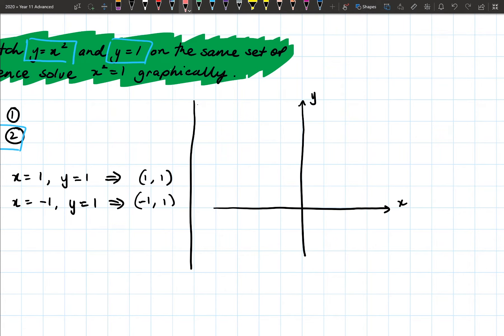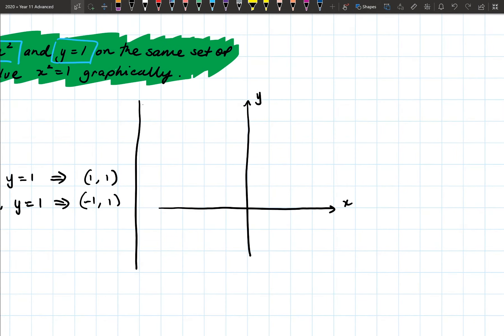But here, they actually ask us to sketch it on the same set of axes and then solve it to find the same set of solutions. So let me just actually do that on the side here. I'm going to draw my Cartesian plane. So I've got here, my Cartesian plane. I've got y, x. I'm going to draw on my two graphs here. The first one is y equals x squared.